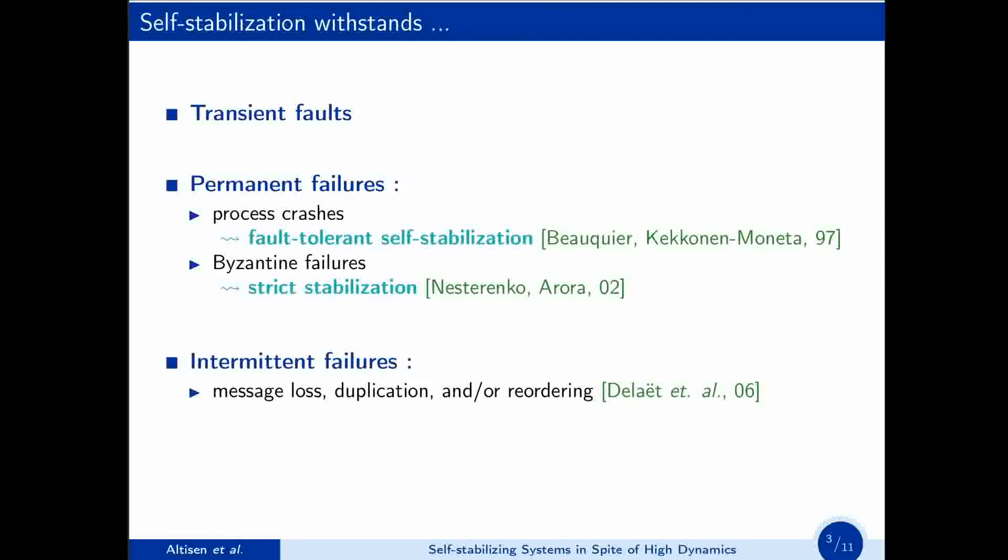One can also withstand intermittent failures, such as message loss, duplication, or reordering. But that is in static networks, and most of the literature of self-stabilization assumes static topologies.